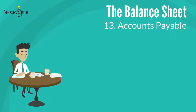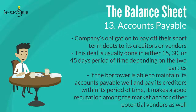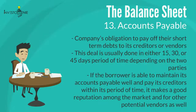Thirteen: accounts payable, also called payables, are the company's obligation to pay off short-term debts to its creditors or vendors. This deal is usually done within 15, 30, or 45 days depending on the two parties. If the borrower maintains its accounts payable well and pays creditors within the agreed period, it makes a good reputation in the market and with other potential vendors.